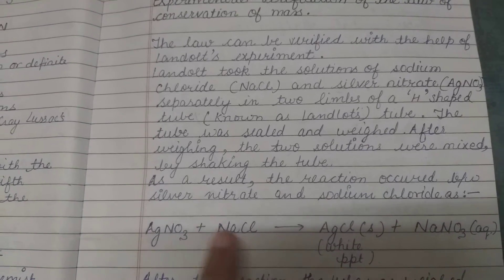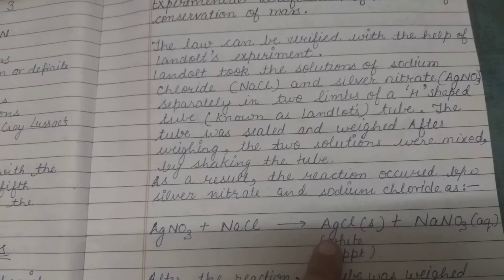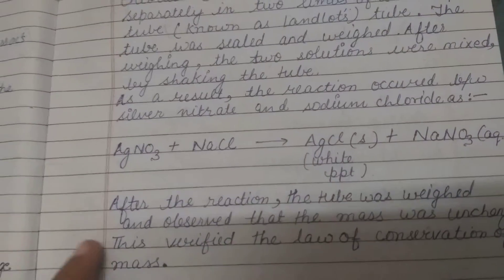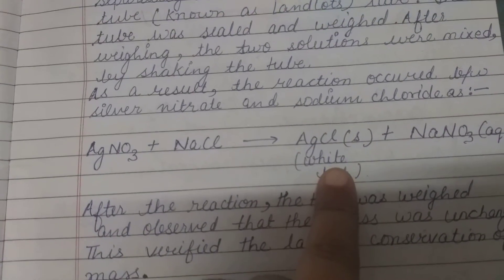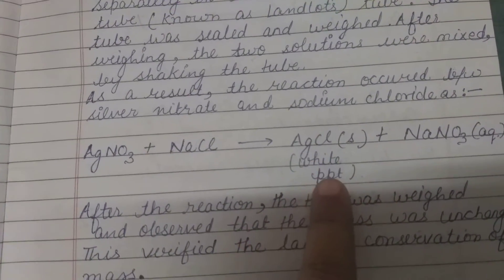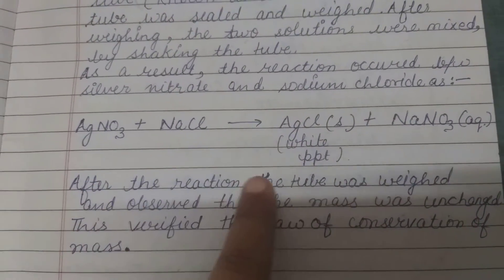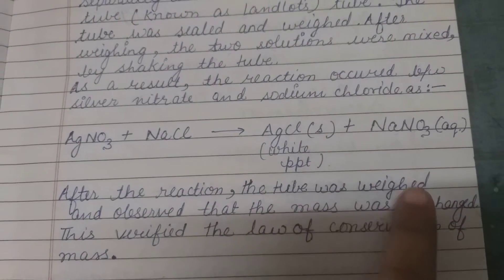When NaCl and AgNO3 react, they form AgCl, a white precipitate. After the reaction, mass was again measured.